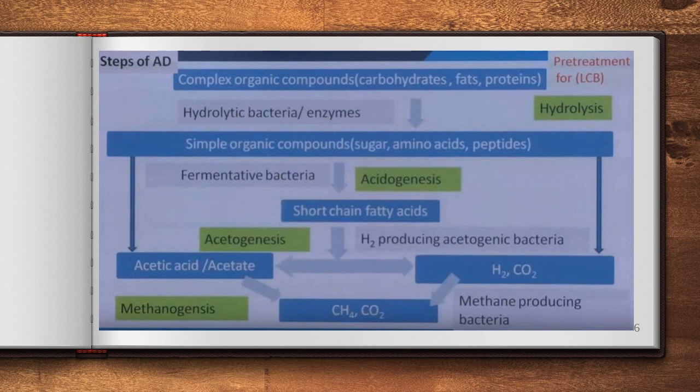The next stage is acetogenesis, where hydrogen-producing acetogenic bacteria convert short-chain fatty acids into carbon dioxide. Finally, methanogenesis occurs, where methane-producing bacteria convert acetic acid, hydrogen, and carbon dioxide into methane and carbon dioxide.